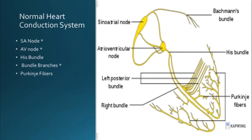In the normal heart conduction system, everything starts in the right atrium in the SA node — sinoatrial node. Things then move over to the left atrium through the Bachmann's bundle. That's how the left atrium is depolarized. From the SA node, impulses go down to the AV node, which is the junction between your atrium and your ventricles. From here, impulses go to the His bundle, then down the left and right bundle branches, and through the Purkinje fibers. The SA node, AV node, and bundle branches are where all of our blocks will be coming from today.